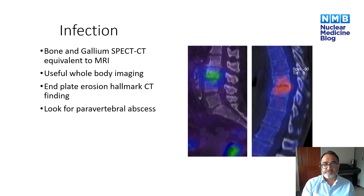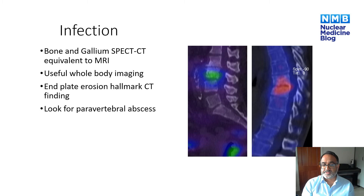SPECT CT is very useful in the investigation of discitis and osteomyelitis in the spine. Bone scans with SPECT CT have been shown to be equivalent to MRI in identifying discitis, and can be useful as part of whole body imaging when you want to exclude discitis in a patient with pyrexia of unknown origin. On the CT component, endplate erosion is a sensitive and specific marker of discitis, helping to differentiate it from degenerative changes. You should also look out for paravertebral abscess, which can be picked up on the non-contrast CT component.